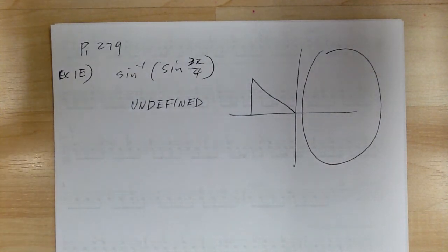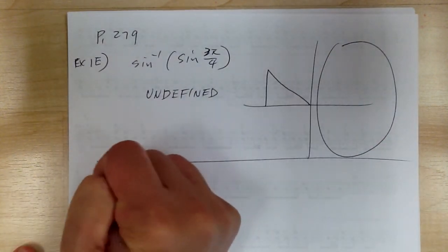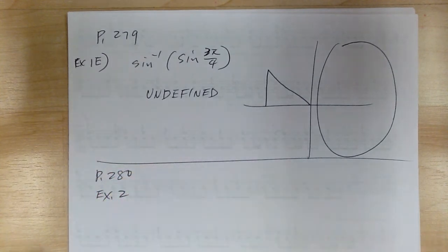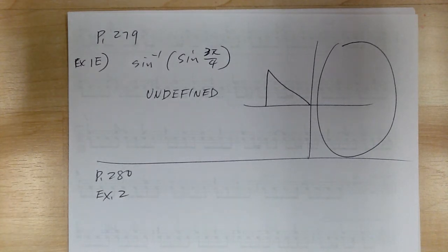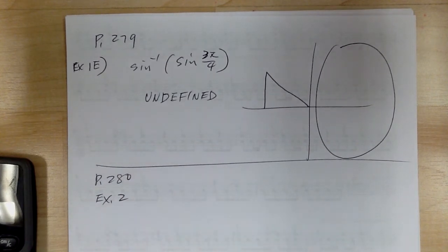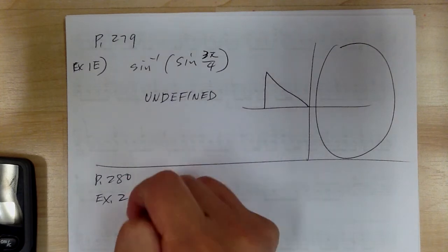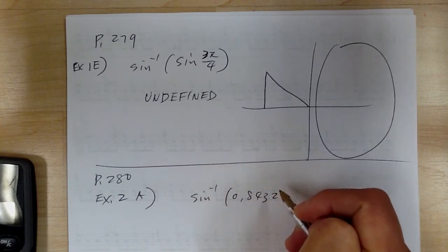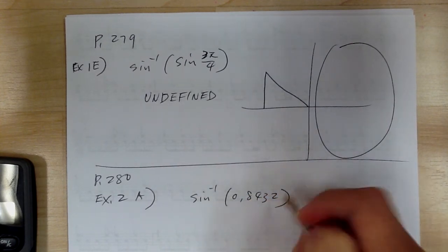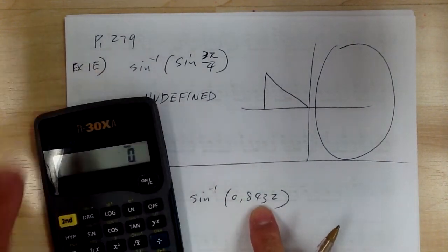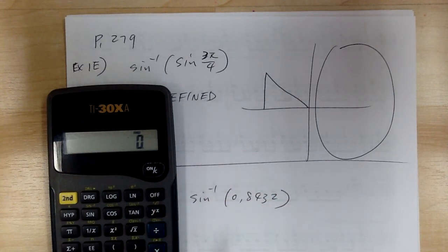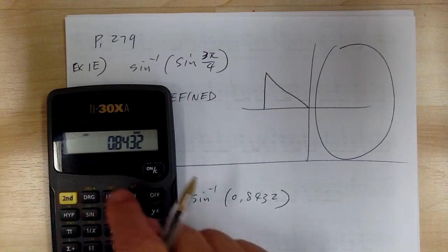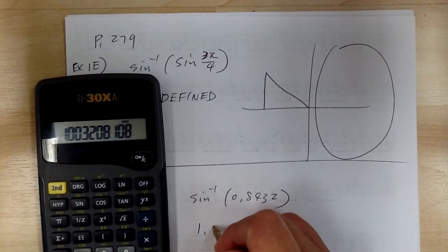Now let's go to example 2, which uses a calculator. When you use a calculator and you're looking for an angle, you have to use the second function key. Make sure your calculator is in radian mode. For 2a, you have inverse sine of 0.8432. You punch in 0.8432, then press second sine. The answer has four significant digits: 1.003.